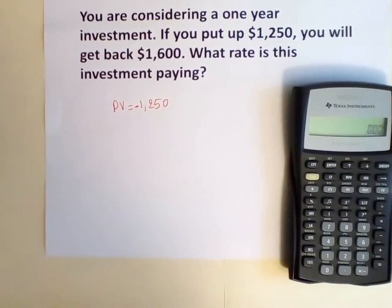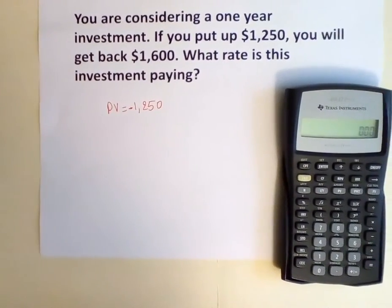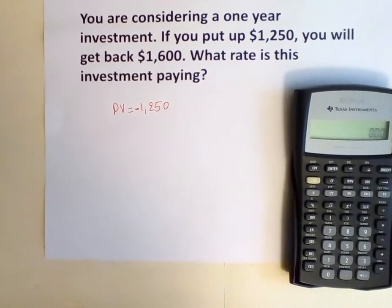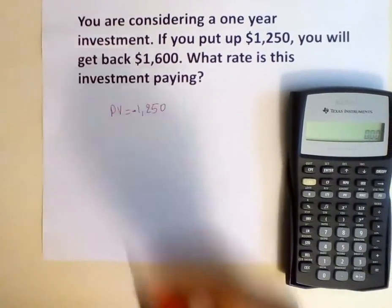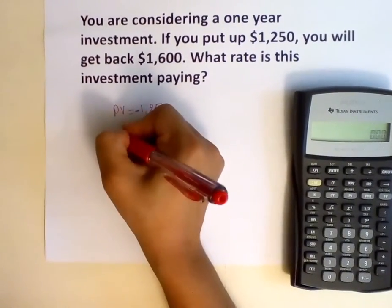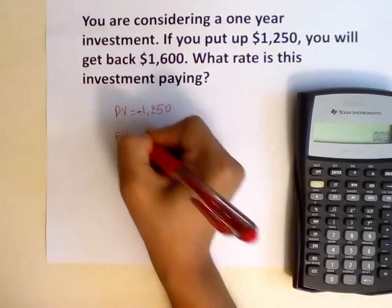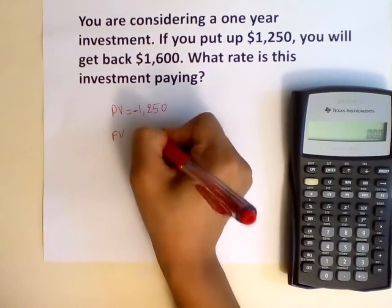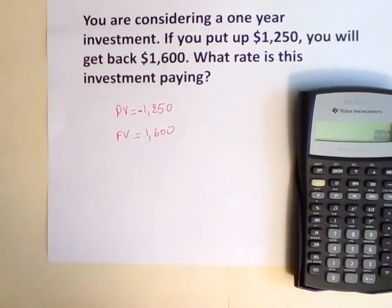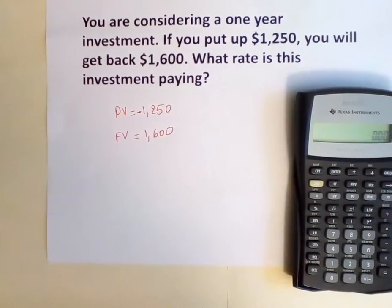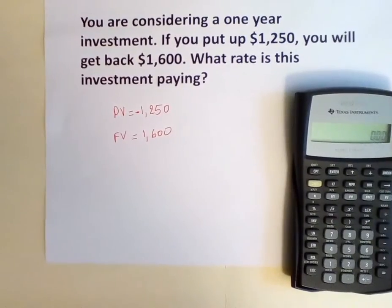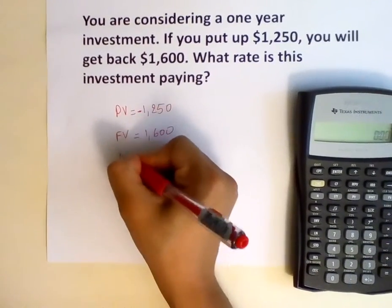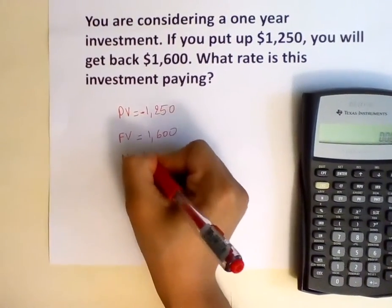We are expecting to receive $1,600 into the future, so FV — future value — equals $1,600. We are investing for one year, so N equals 1.